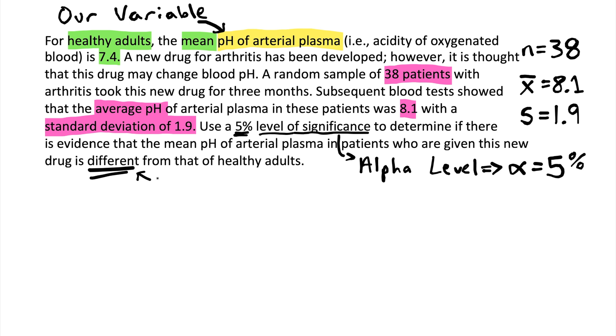And we wanted to determine if the mean pH is different from that of healthy adults. So this 'different' is really important because you can be different by being more than something or different by being less than something. And that goes in two directions, which is why this is indicating that the test that we're going to be doing for this situation is going to be what we call two-sided.